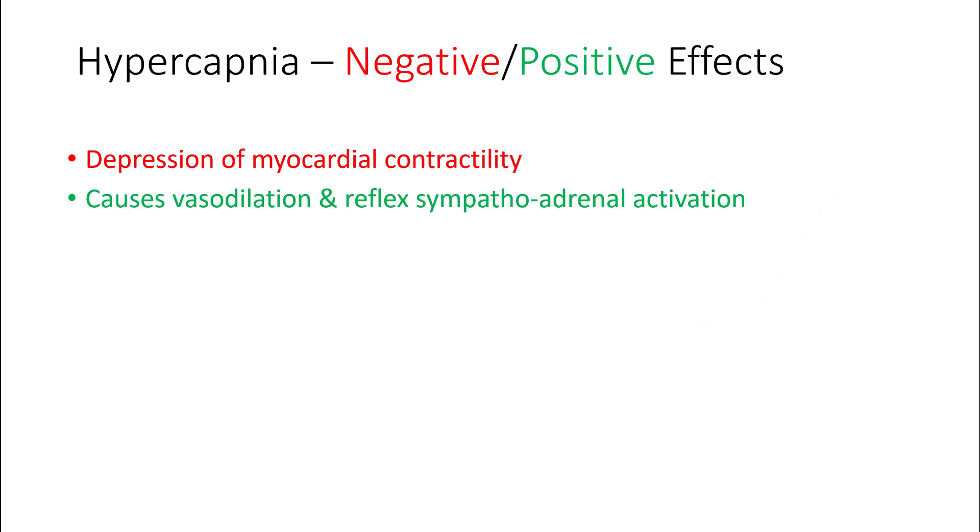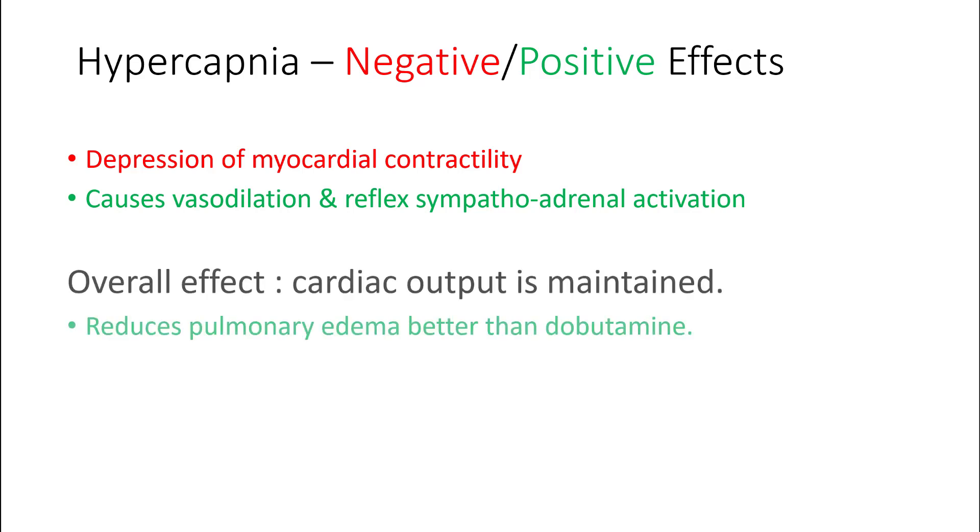Hypercapnia has been shown to depress myocardial contractility; however, the level of pH at which this happens has been debated. Hypercapnia also causes vasodilation and reflex sympatho-adrenal activation, and a combination of these two effects is that the net cardiac output is mostly maintained or may be increased. In one study, they found that hypercapnia reduces pulmonary edema better than dobutamine.